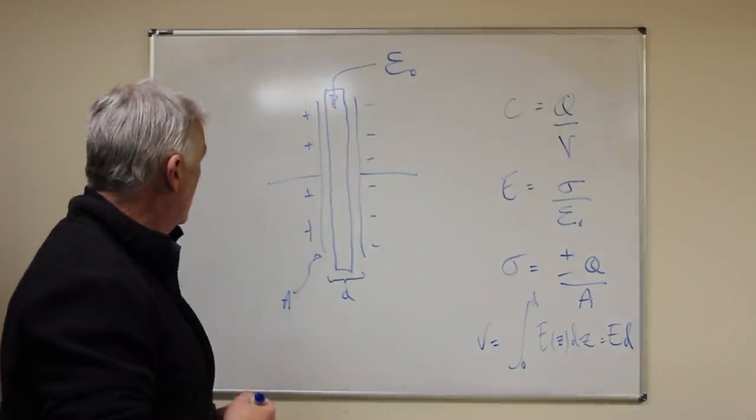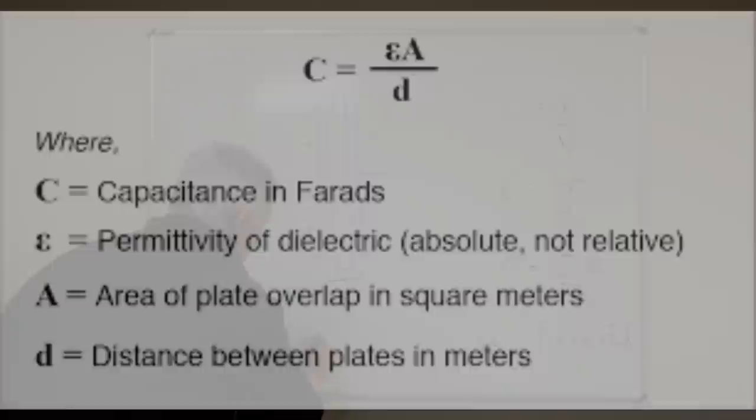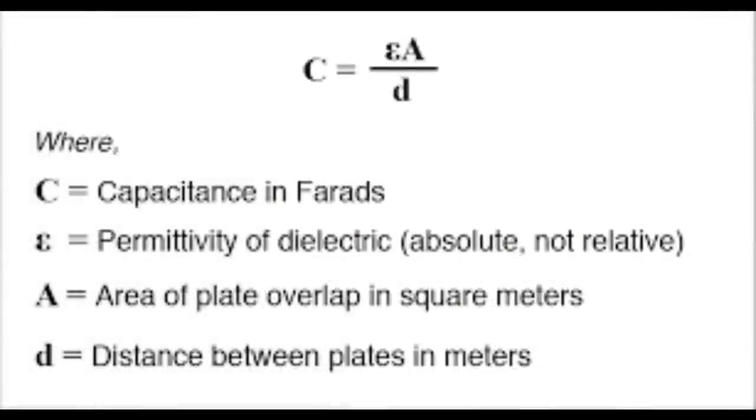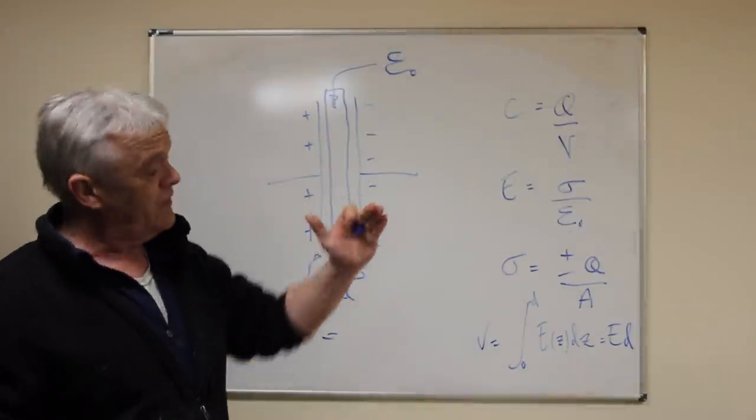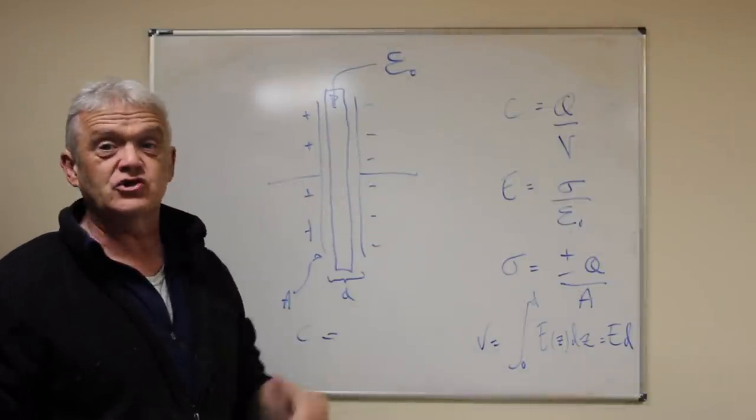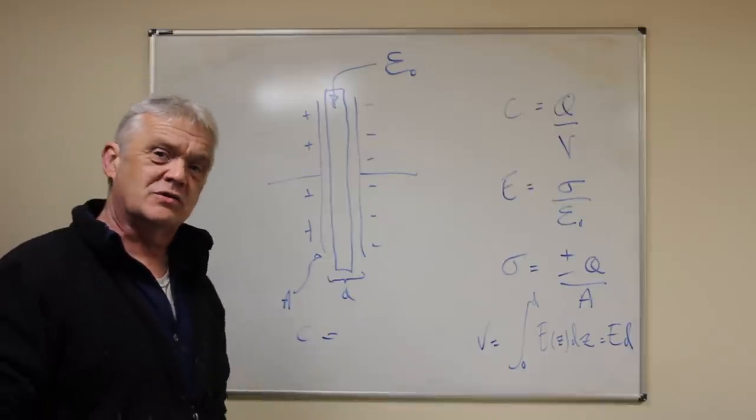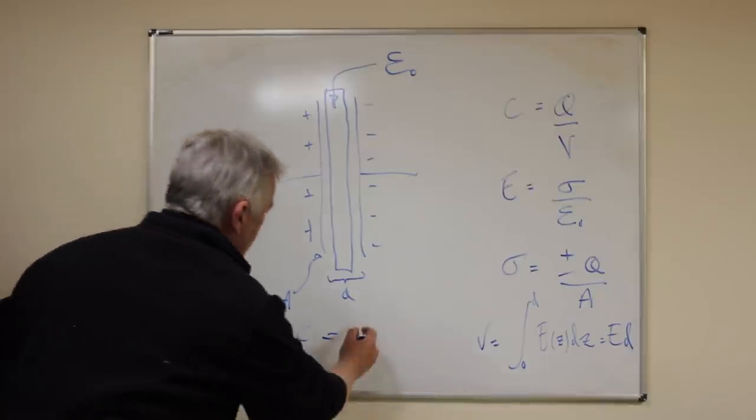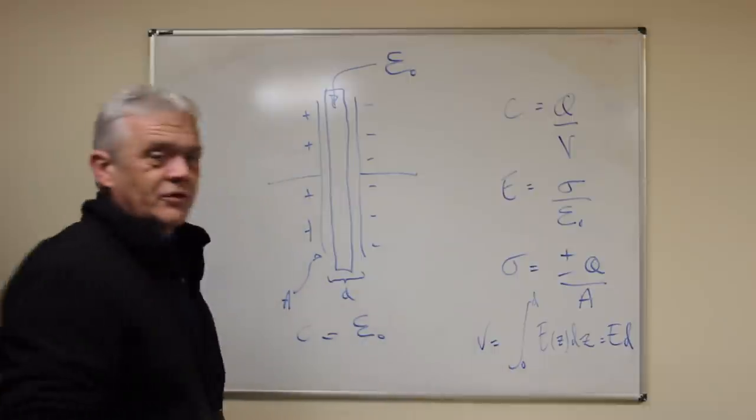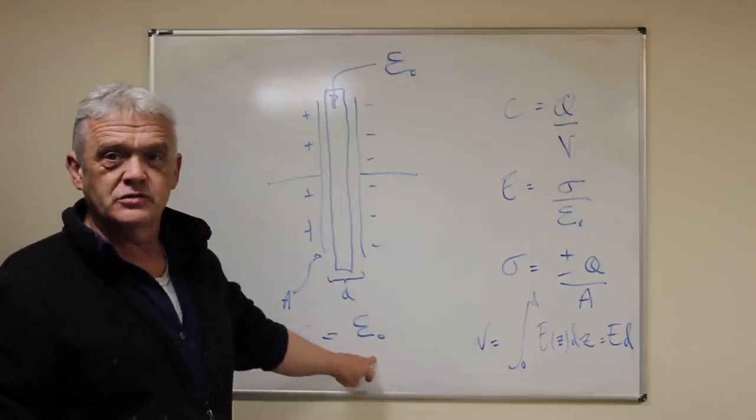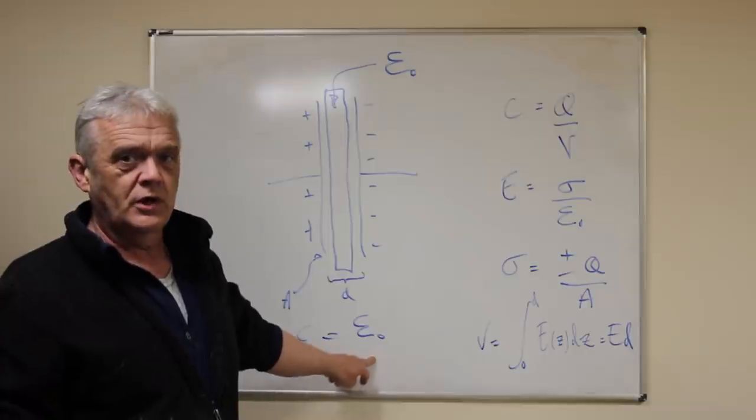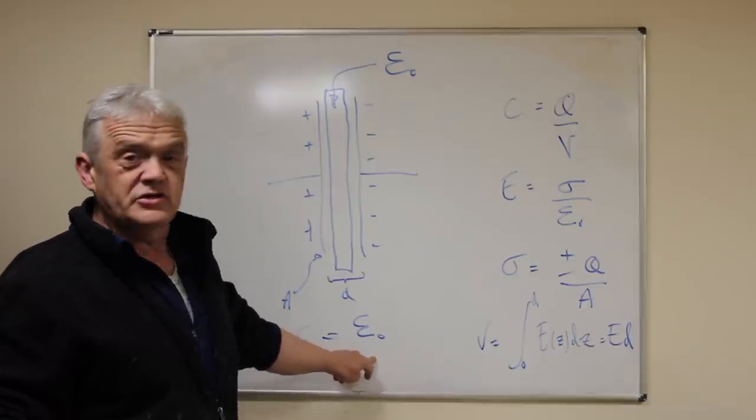So the capacitance—what's going to affect it based on our model? One is the ability of this material to polarize, to turn in an applied electric field and store electrical energy. It's going to have something to do with the permittivity, and we know as permittivity goes up, capacitance goes up.